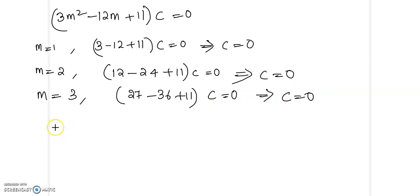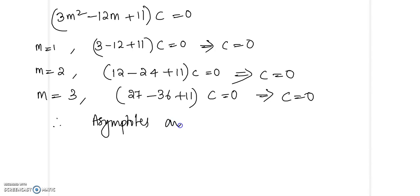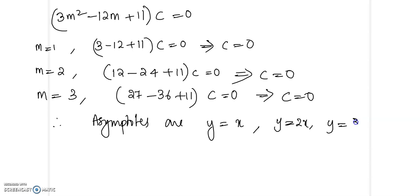Since the coefficient is non-zero, that means c is zero. Therefore, when m is 1, 2, and 3, we get the value c equal to 0. So the asymptotes are y equal to mx plus 0, giving y equal to x, y equal to 2x, and y equal to 3x. These are the asymptotes of the given equation.